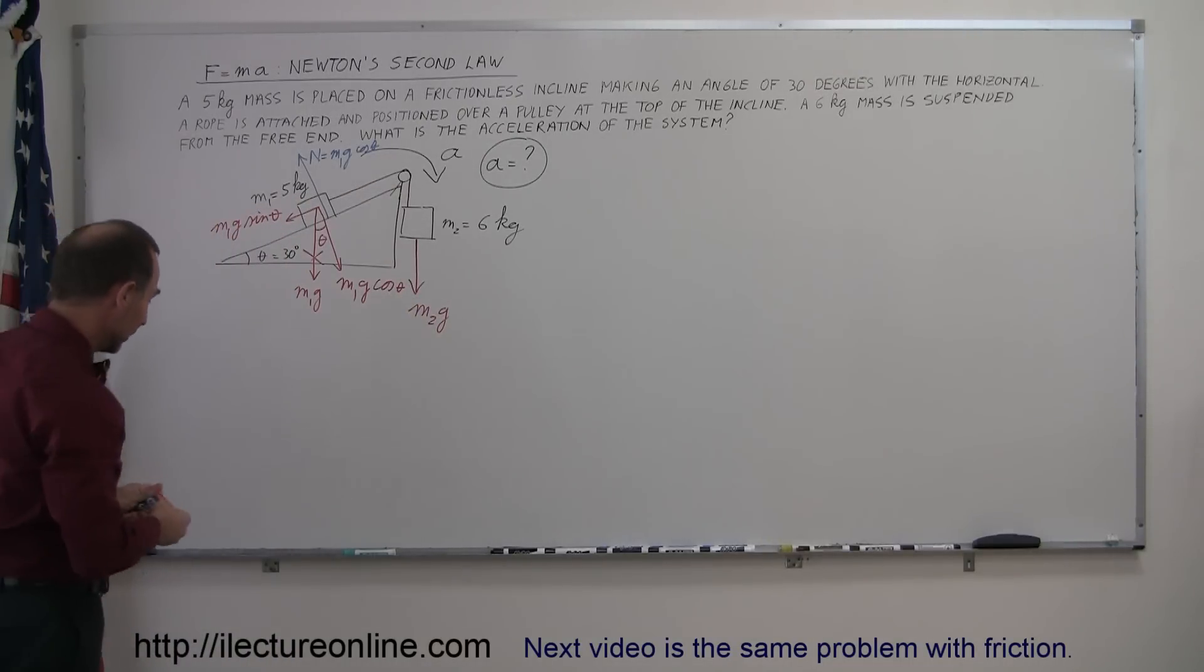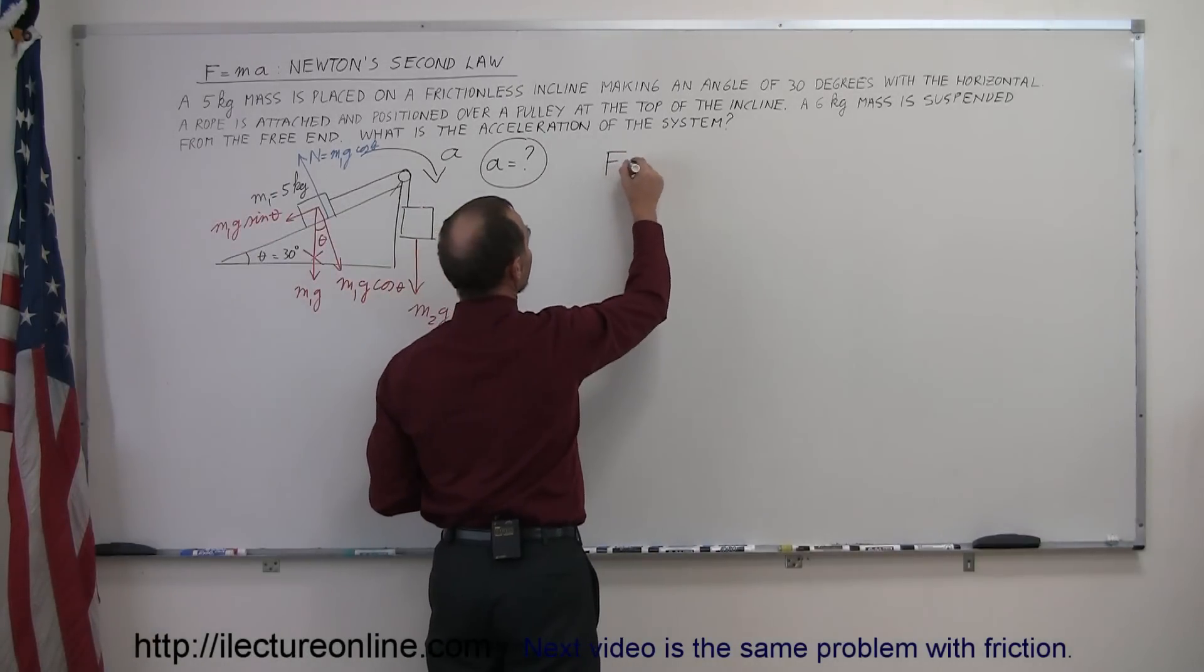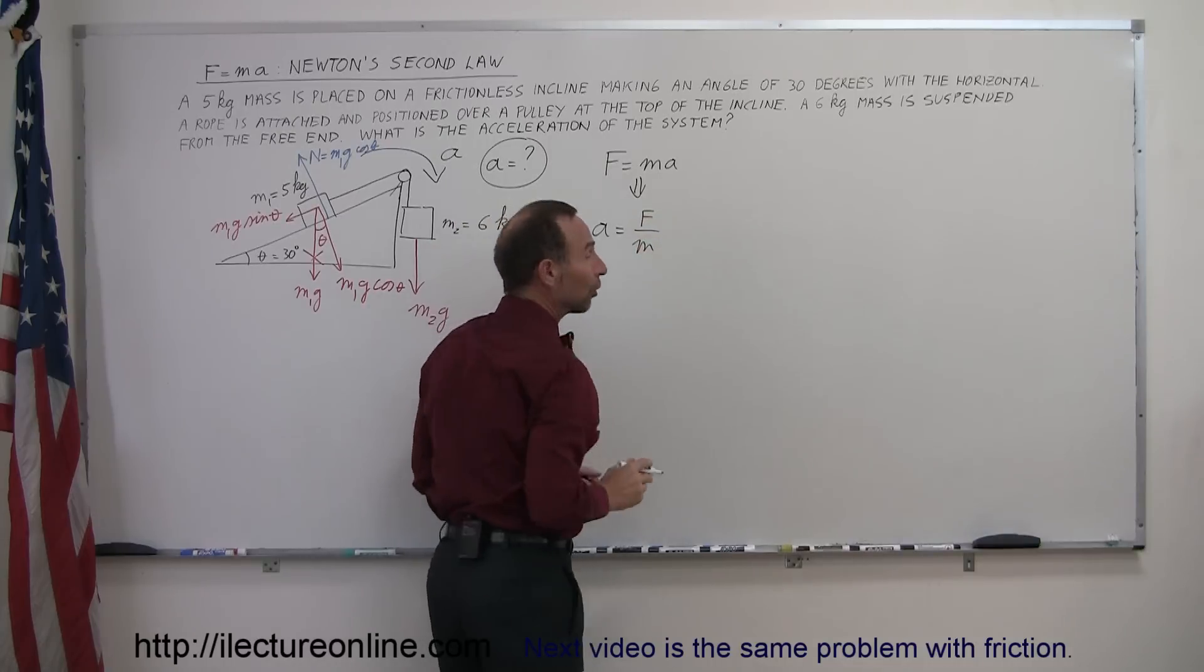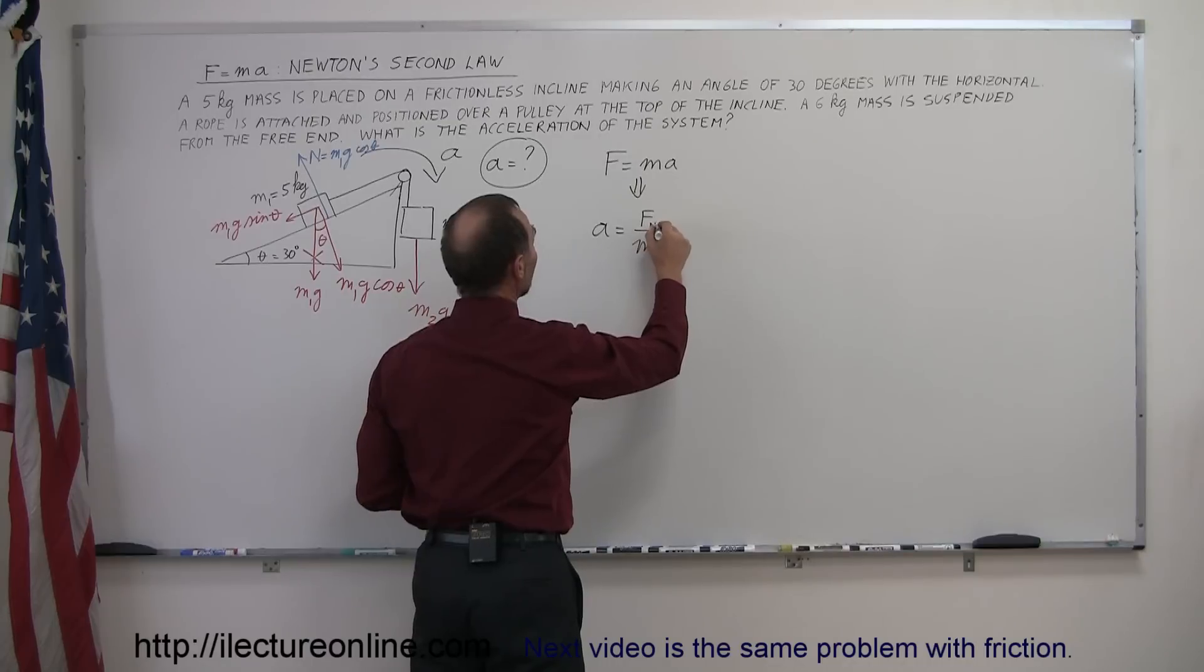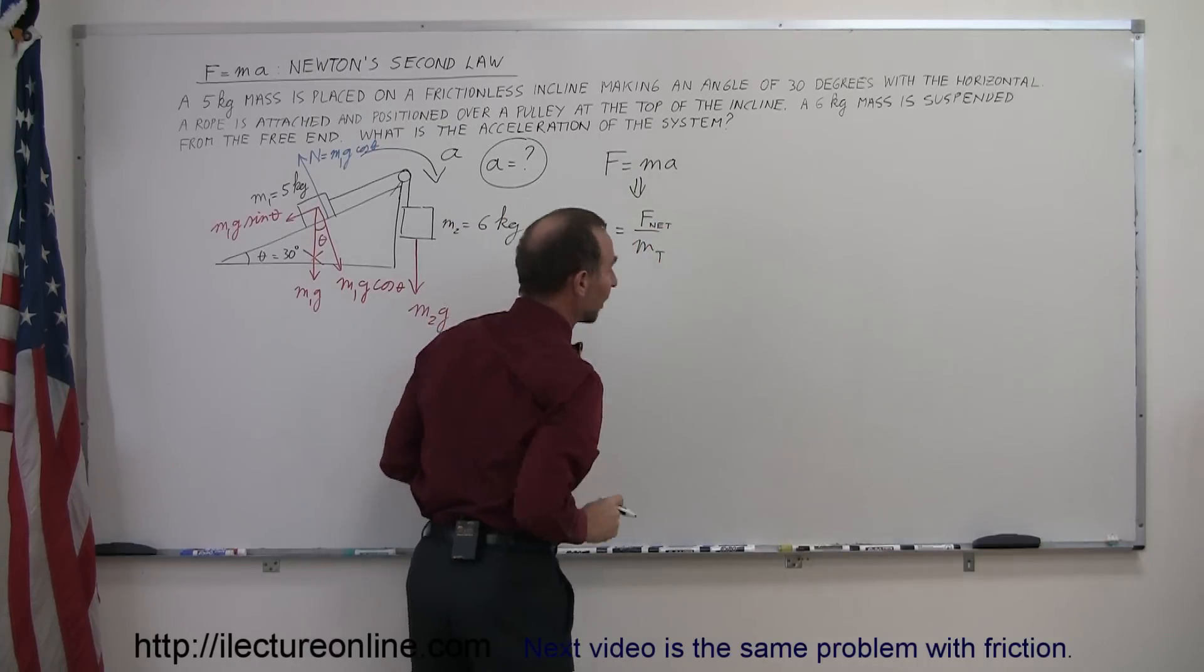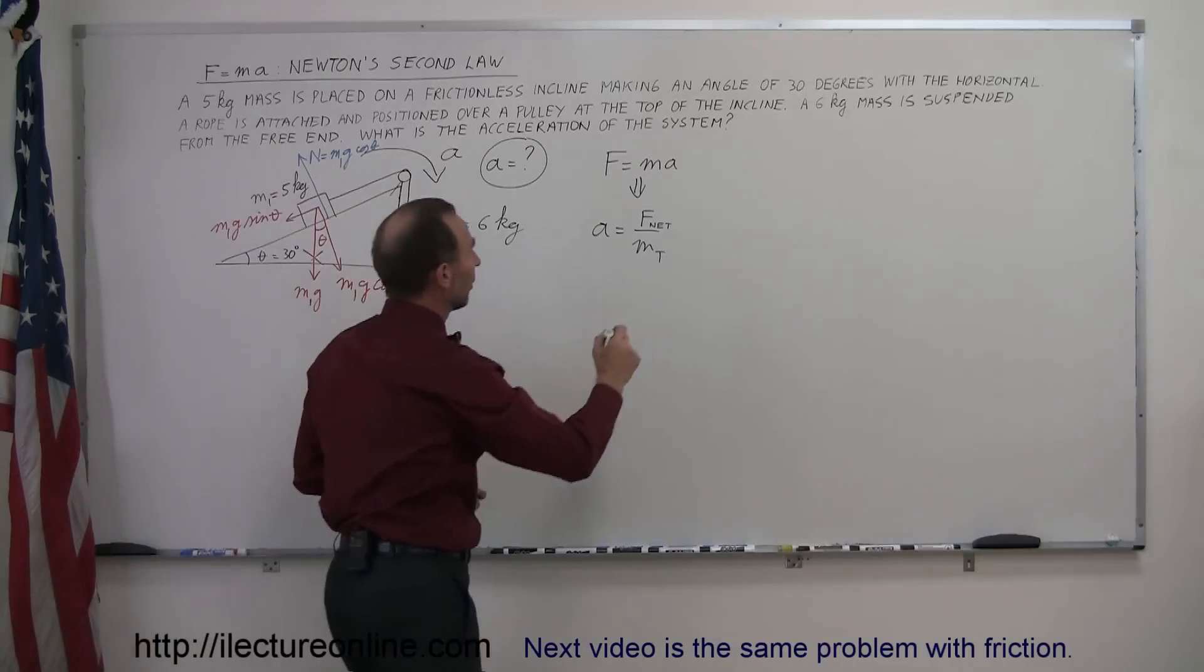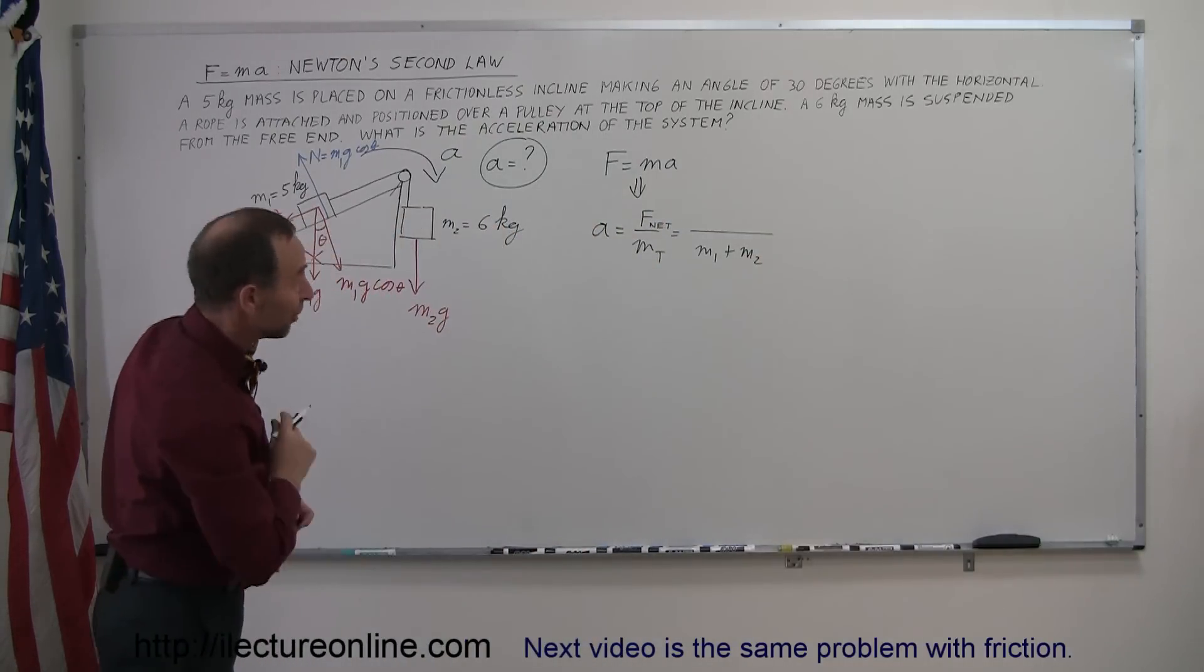Now that we have that, we now grab our equation, F equals ma, and solve it for a. So if we solve it for a, we have a equals F divided by m. And of course, if we work it out this way, this is the net force that we want. What is the net force on the whole system? And we divide that by the total mass of the whole system. Finding the total mass is not hard. We simply add the two masses together. So this is equal to m1 plus m2 in the denominator.